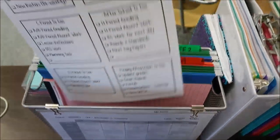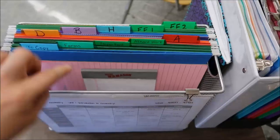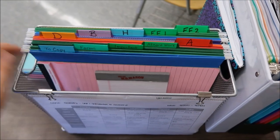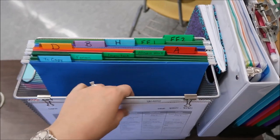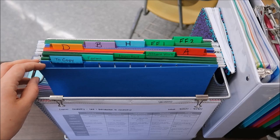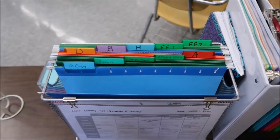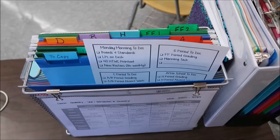Okay so inside I have a generic weekly to-do list and then behind that I have a couple of notepads just in case so they're handy. The first folder I have is anything that needs to be copied. So if I need something copied I'll put it in here and usually if it's a paper I will put it in standing up so that I see it.